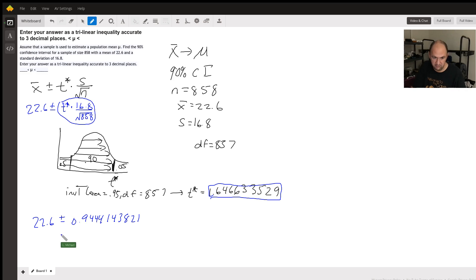To get the lower bound, take 22.6 minus 0.9444, and for the upper bound take 22.6 plus 0.9444. Calculating that out, the lower bound is 21.656 if I round to three decimal places, and the upper bound is 23.544.